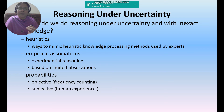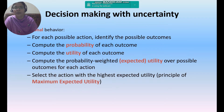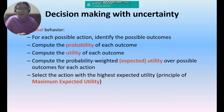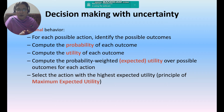How to make decisions in such a kind of uncertainty environment? We have to show rational behavior. For each possible action: identify the possible outcomes, compute the probability of each outcome, compute the utility of each outcome, compute the probability-weighted expected utility over possible outcomes for each action, and select the action with the highest expected utility.